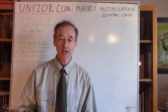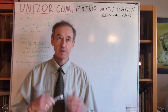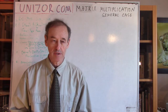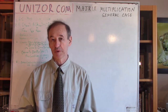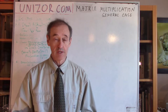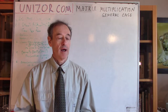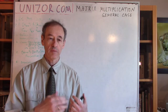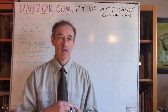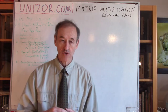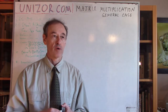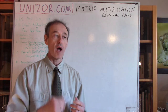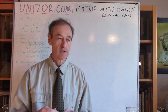Sometimes people just give the definition of what is the product of two matrices and then they investigate the properties, like for instance associativity and some others. I have chosen a different approach, starting from matrices as representations of linear transformations, and approaching the product of two matrices as a composition of linear transformations.